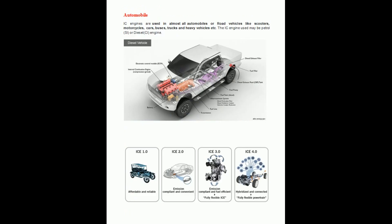The next application is the automobile. Automobile application is well known — it is transportation on land for our day-to-day activities and movement of human beings. Automobiles, also called road vehicles, include scooters, motorcycles, cars, buses, trucks, and AV vehicles. The IC engine used may be either a spark ignition engine or a compression ignition engine — that is, petrol or diesel engines.